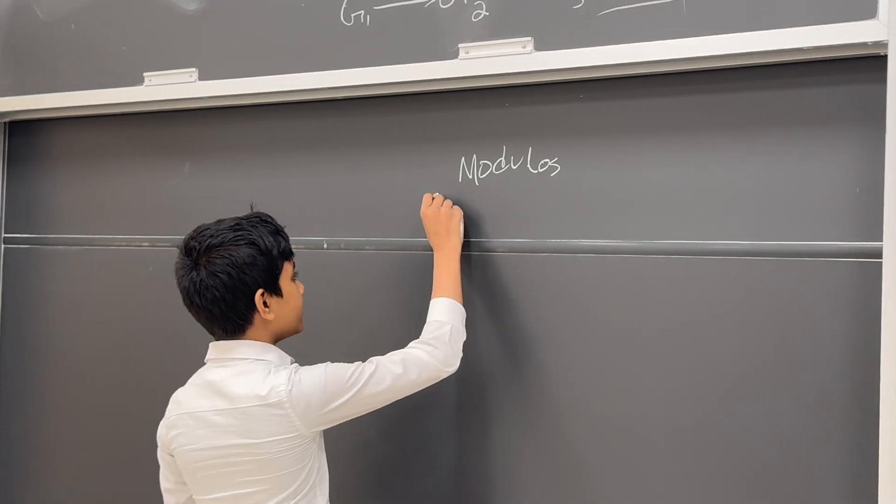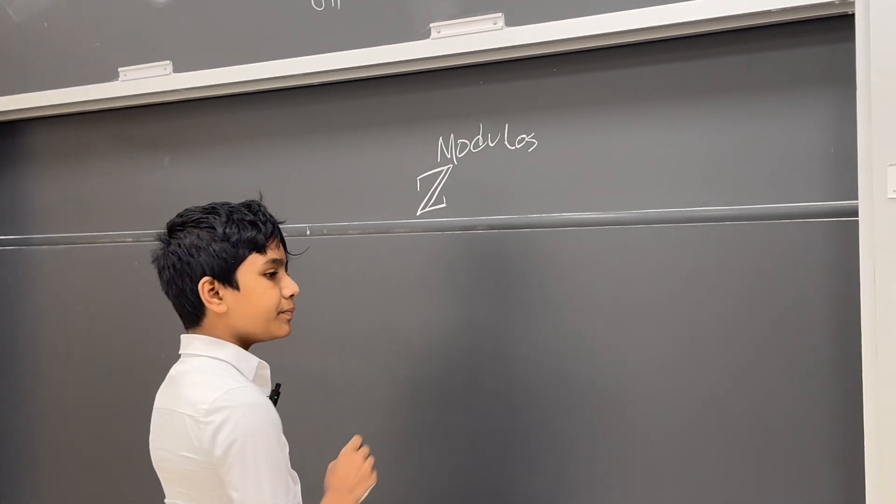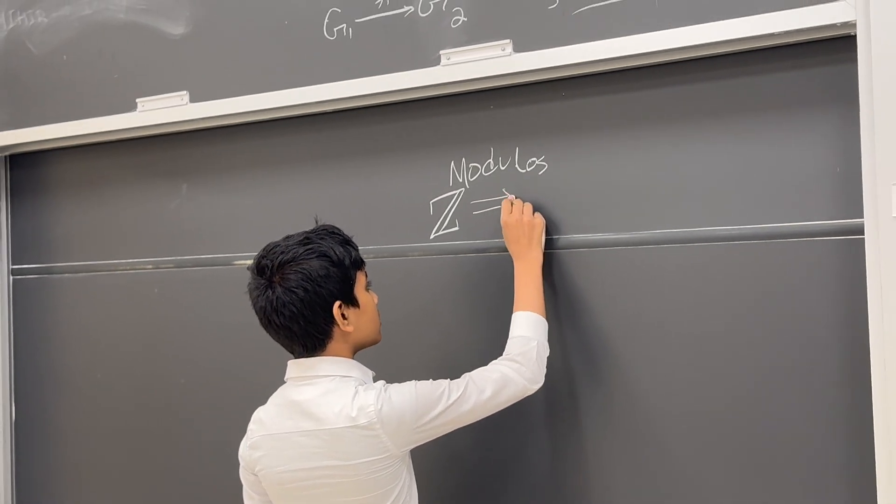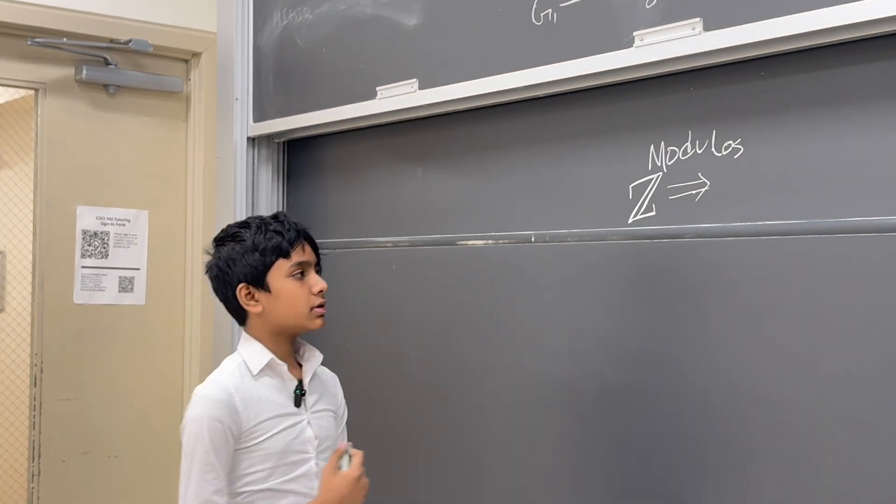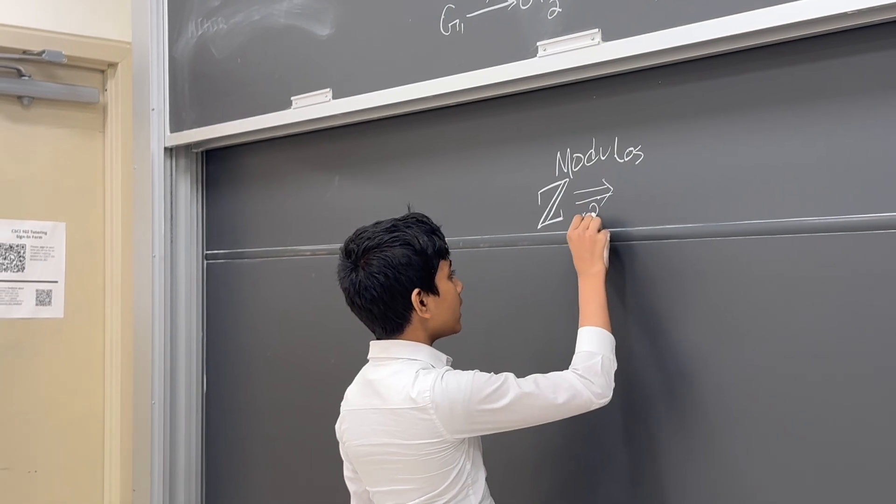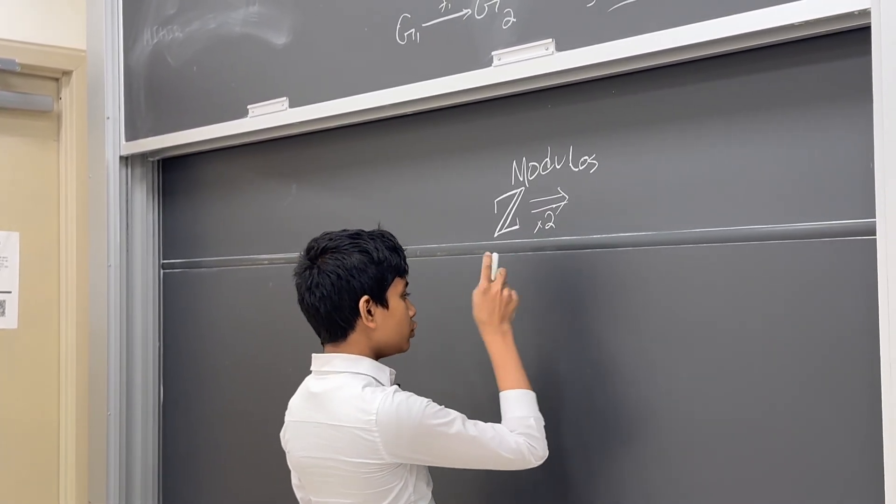So specifically, let's take the set of integers Z. Then what we're going to do is we're going to map them with a function f. So that function f is going to be multiplying everything by 2, or you could say y equals 2x even.